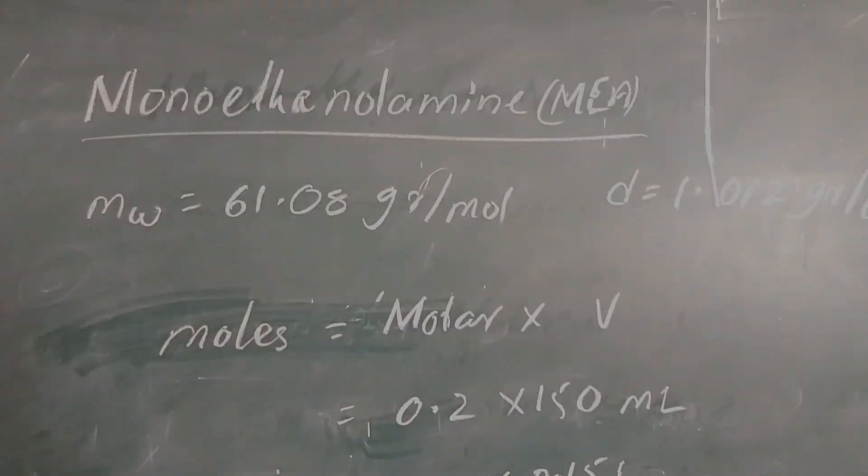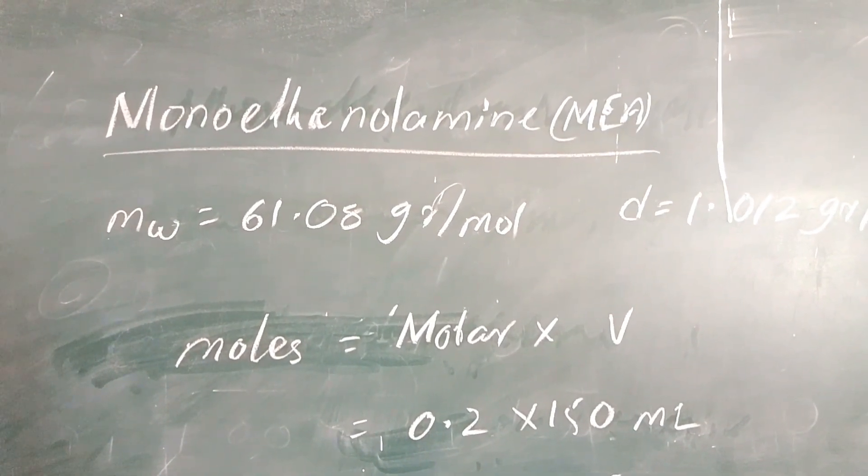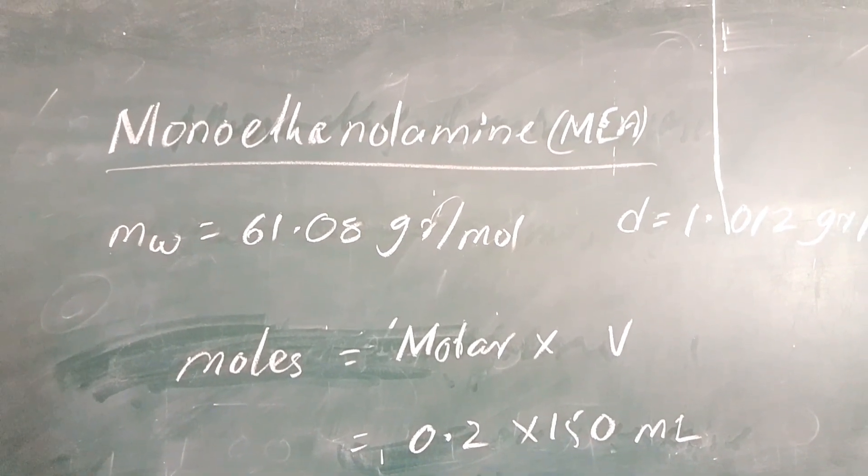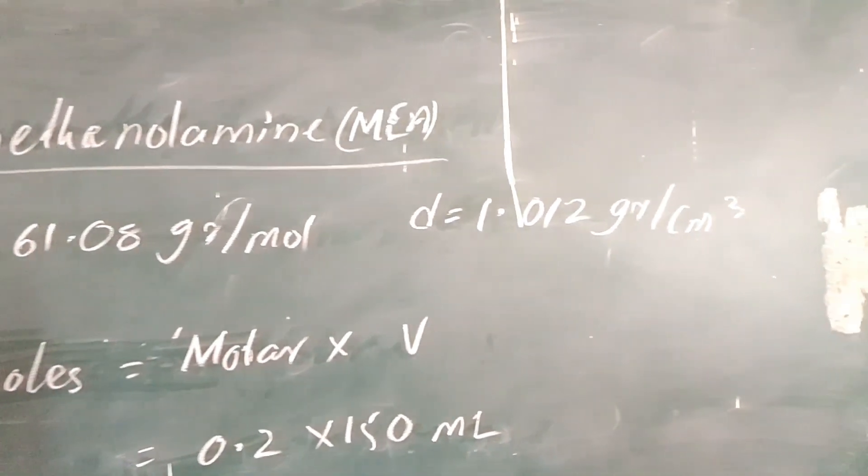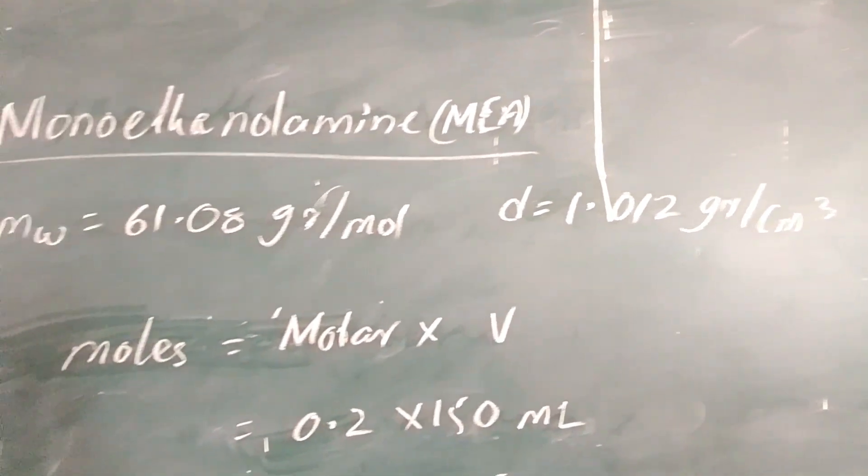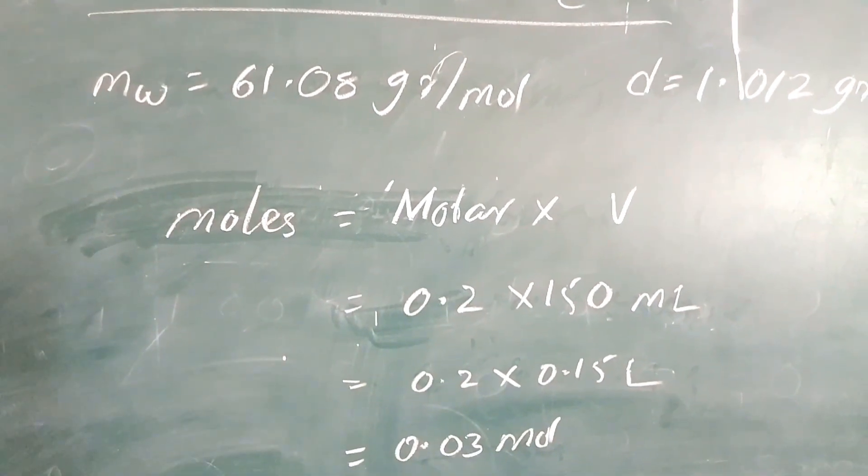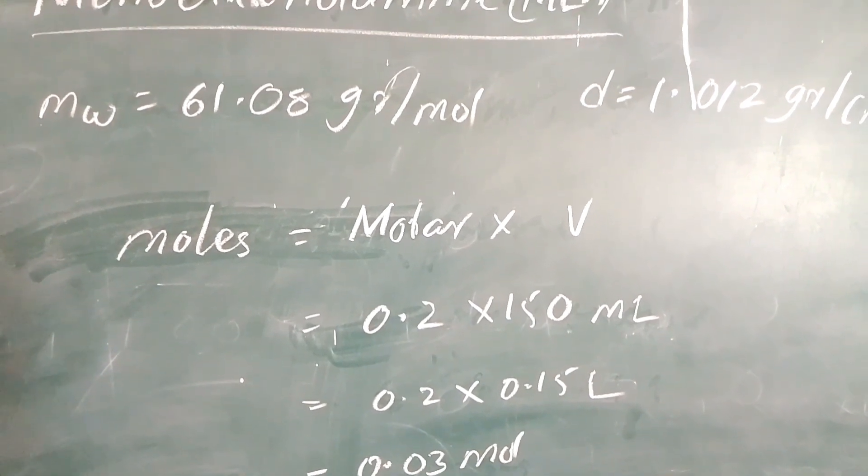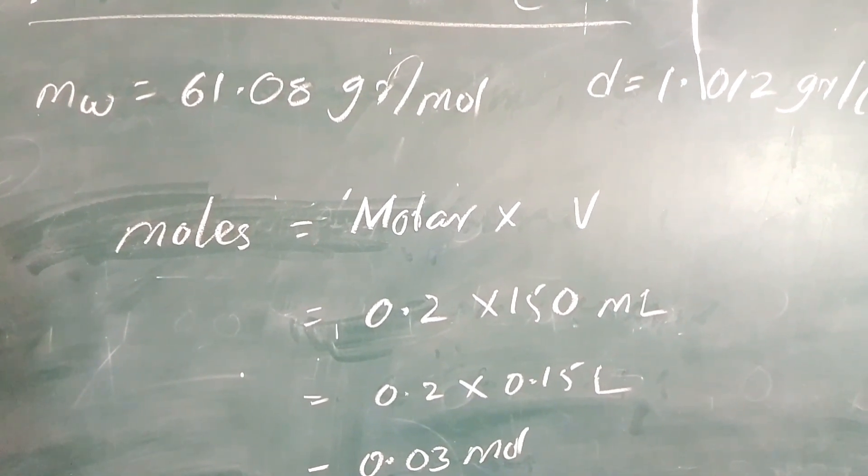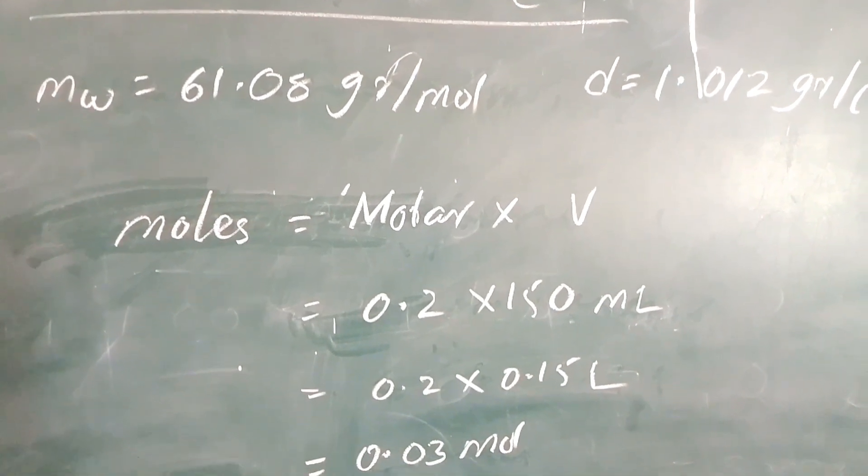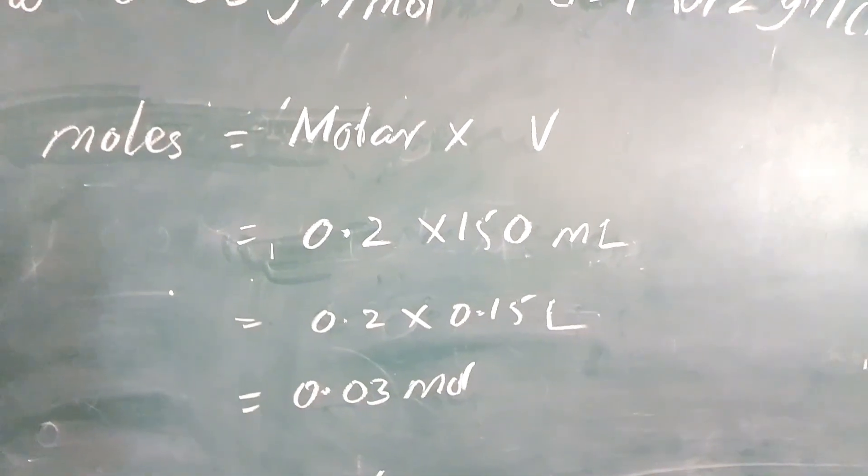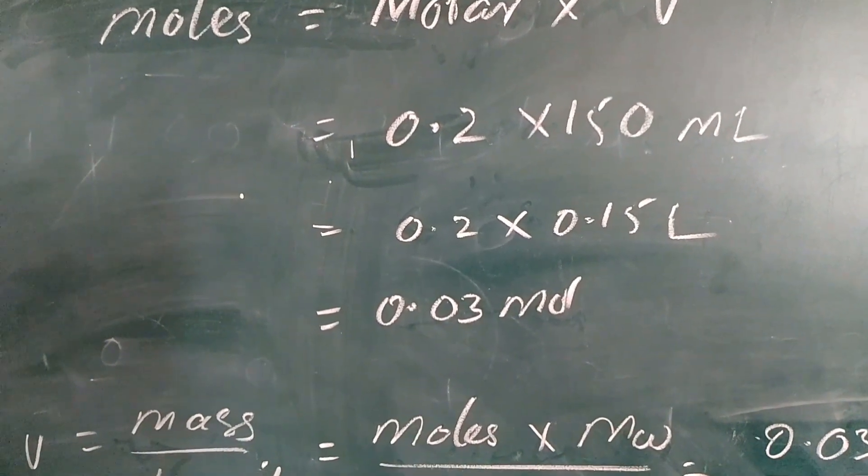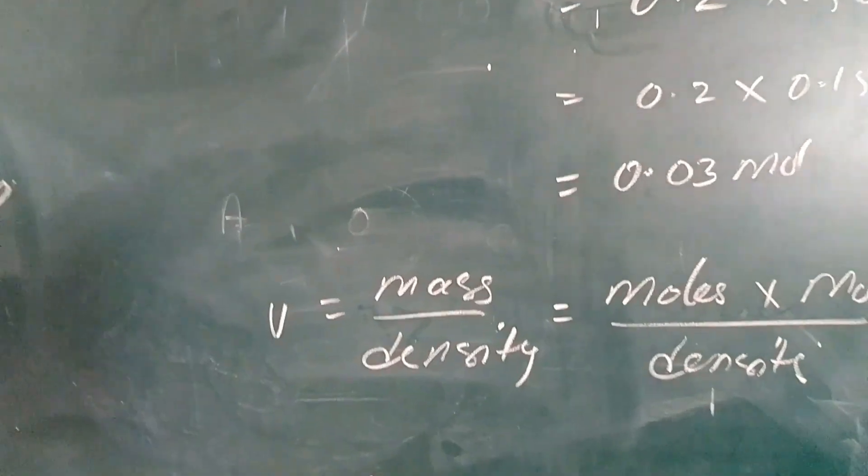The another component that we are adding is monoethanolamine (MEA). The corresponding molecular weight of MEA is 61.08 grams per mole and corresponding density is 1.012 grams per centimeter cube. We have to calculate number of moles equals molar into volume, so 0.2 into 150 ml or 0.15 liters.